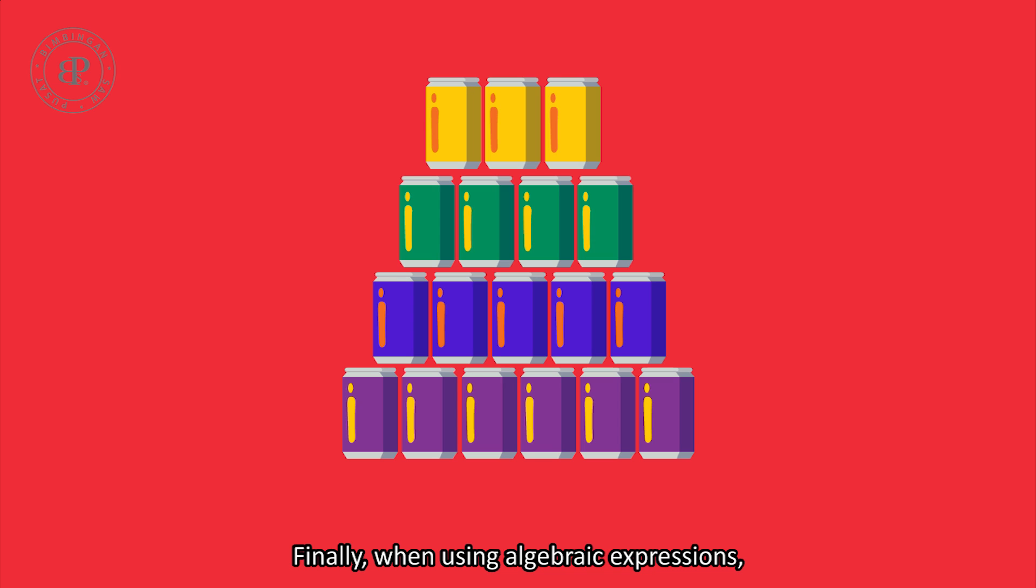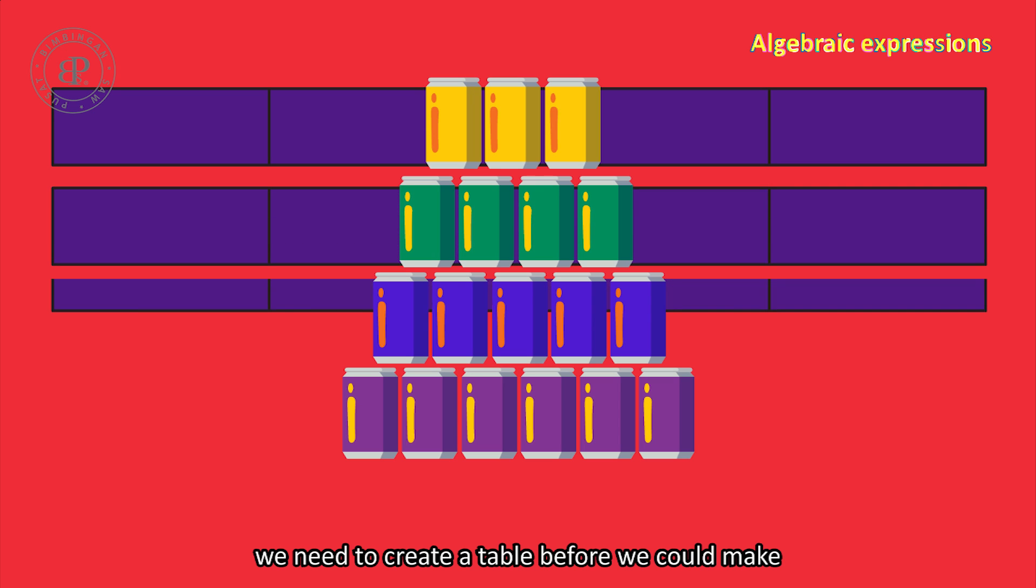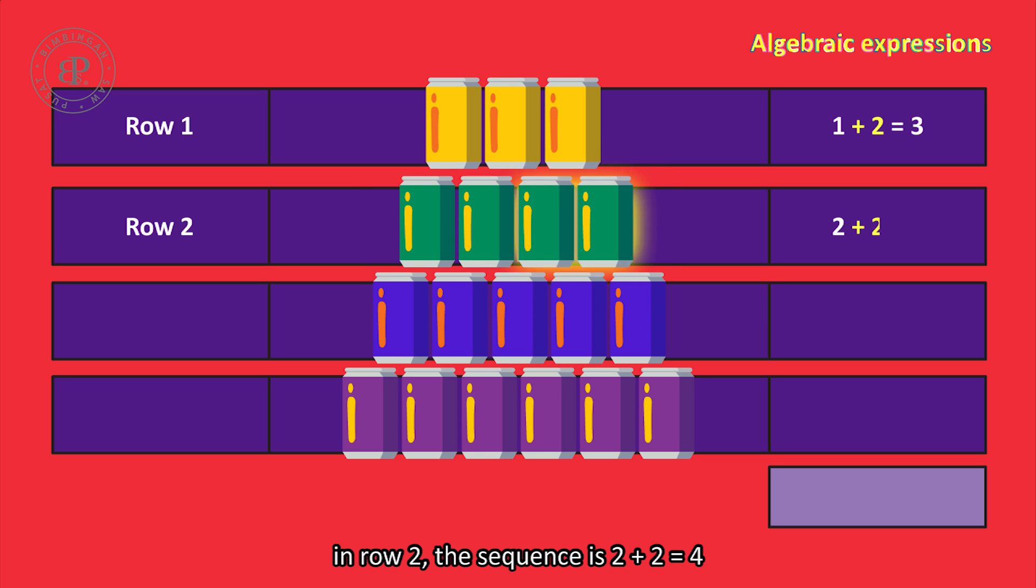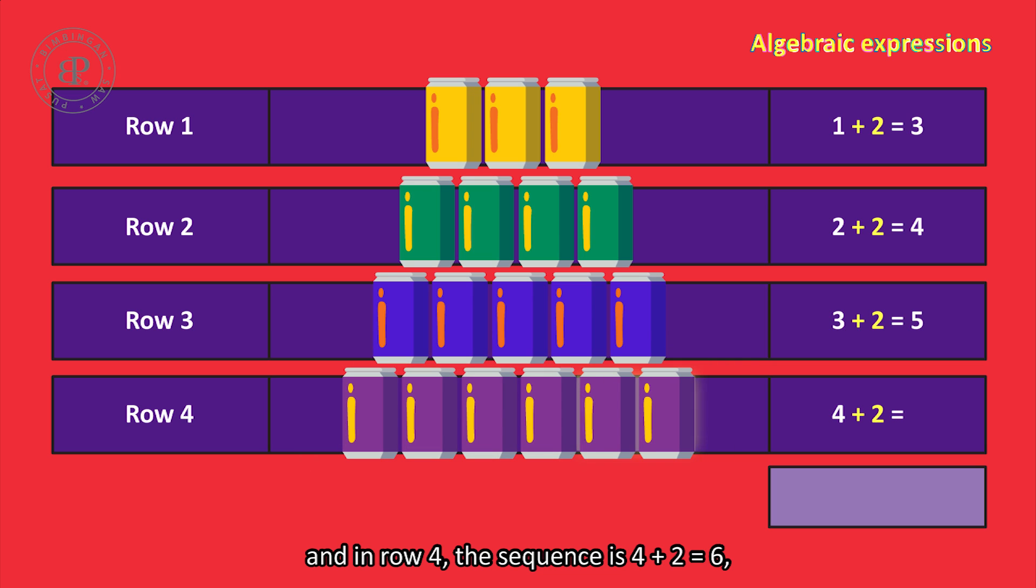Finally, when using algebraic expressions, we need to create a table before we can make our own assumptions to generalize it. For example, in row 1, the sequence is 1 plus 2 equals 3. In row 2, the sequence is 2 plus 2 equals 4. In row 3, the sequence is 3 plus 2 equals 5, and in row 4, the sequence is 4 plus 2 equals 6.